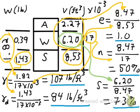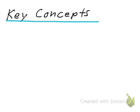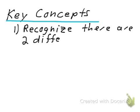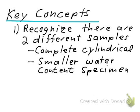The problem is now finished. We've calculated all the required quantities: the void ratio, porosity, degree of saturation, total unit weight, and dry unit weight. Before we finish, it's really important to highlight two key concepts. First, recognizing that there are two different samples in these problems — the complete undisturbed cylindrical sample from the ground, and the smaller water content specimen taken from that cylindrical sample. You need to understand they're separate and use their numbers appropriately.